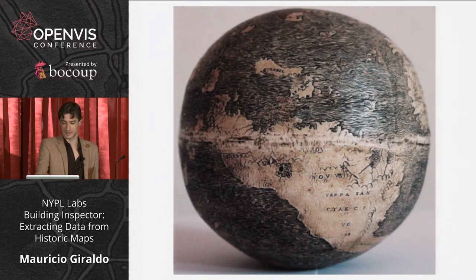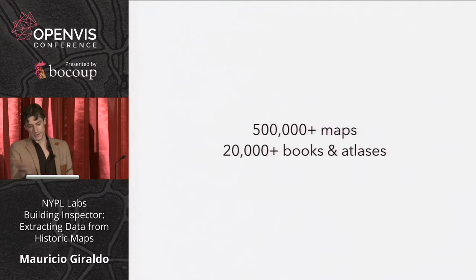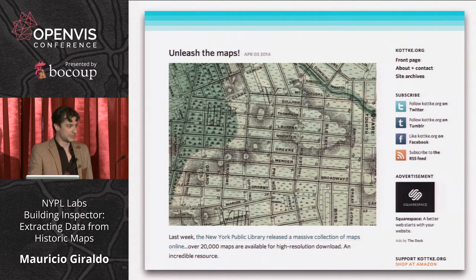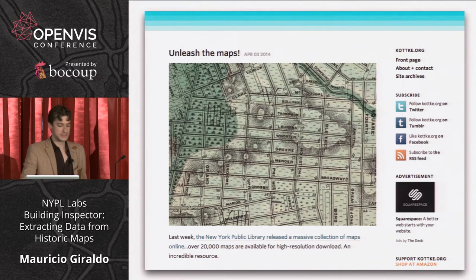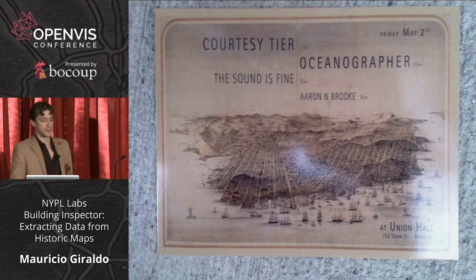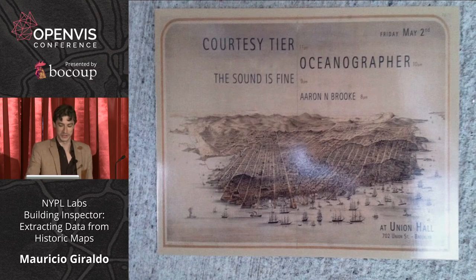This is apparently the earliest known depiction of what Europeans called the New World. In all, 500,000 plus maps, 20,000 plus books and atlases, which have been recently released — the digitized versions of which have been released as public domain, or actually CC0 license. So you can download high resolution versions of these maps and do, you know, your punk band flyer — or important scholarly work.